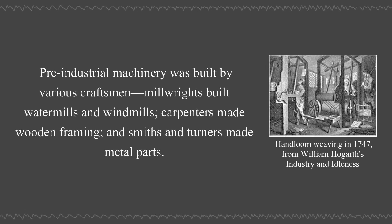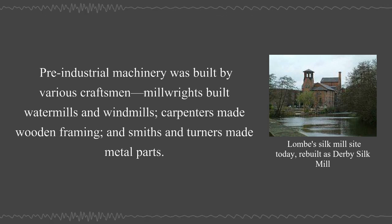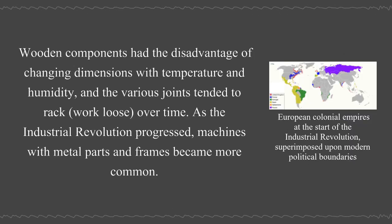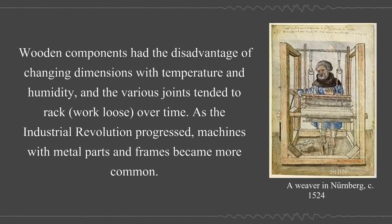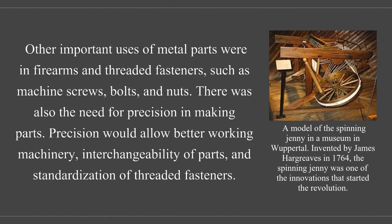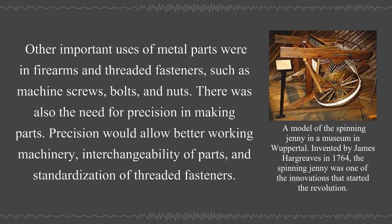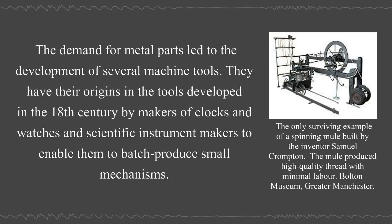Pre-industrial machinery was built by various craftsmen: millwrights built water mills and windmills, carpenters made wooden framing, and smiths and turners made metal parts. Wooden components had the disadvantage of changing dimensions with temperature and humidity. As the Industrial Revolution progressed, machines with metal parts and frames became more common. Other important uses of metal parts were in firearms and threaded fasteners such as machine screws, bolts, and nuts. Precision would allow better working machinery, interchangeability of parts, and standardization of threaded fasteners. The demand for metal parts led to the development of several machine tools.